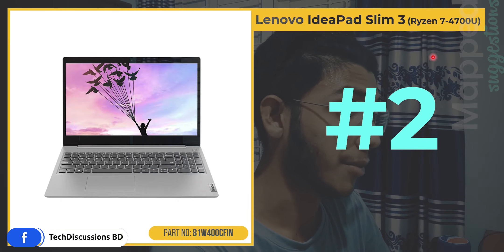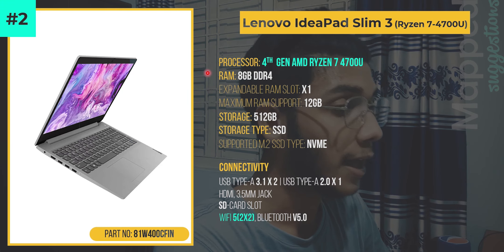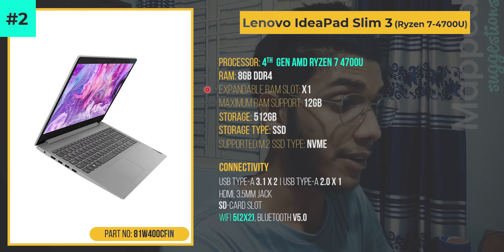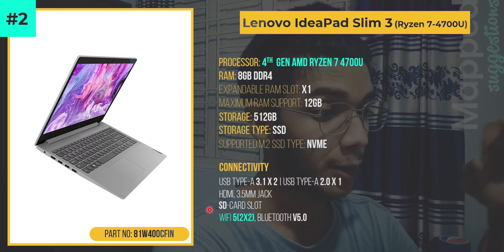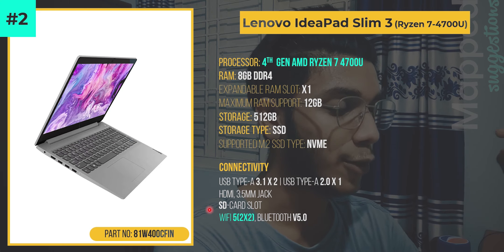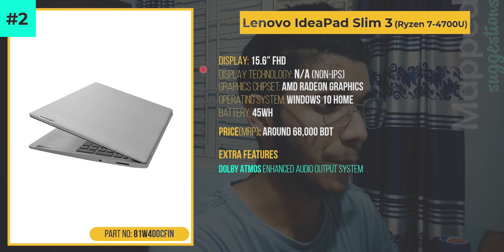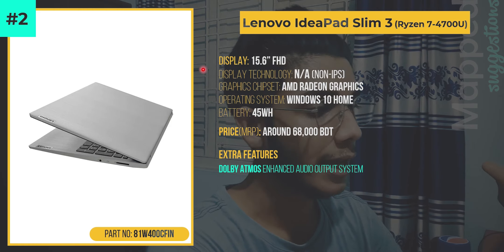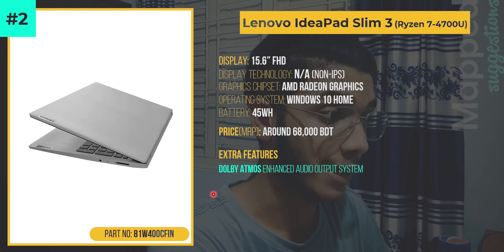Suggestion number two is the Lenovo IdeaPad Slim 3i with its AMD Ryzen 7 4700U processor — a 4th generation AMD Ryzen 7 4700U. For storage, it comes with an NVMe SSD. For connectivity, it has an extraordinary Wi-Fi 5 setup. The display is a 15.6 inch but non-IPS panel FHD display. The price is really great to be honest, and the extra feature is Dolby Atmos enhanced audio output system, which definitely does the job.